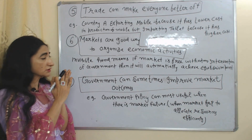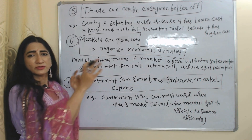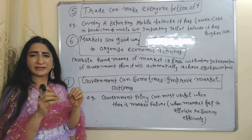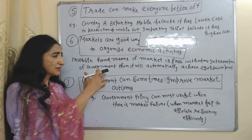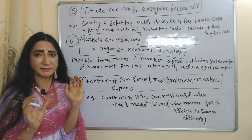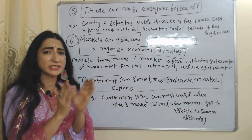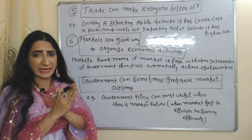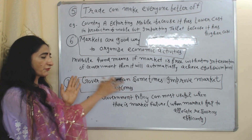The next principle is markets are a good way to organize economic activities because of the invisible hand. The invisible hand means that if the market is free without any intervention of government, then it will automatically reach equilibrium point, because there are some forces that push the market towards the equilibrium point — and these forces are called the invisible hand.